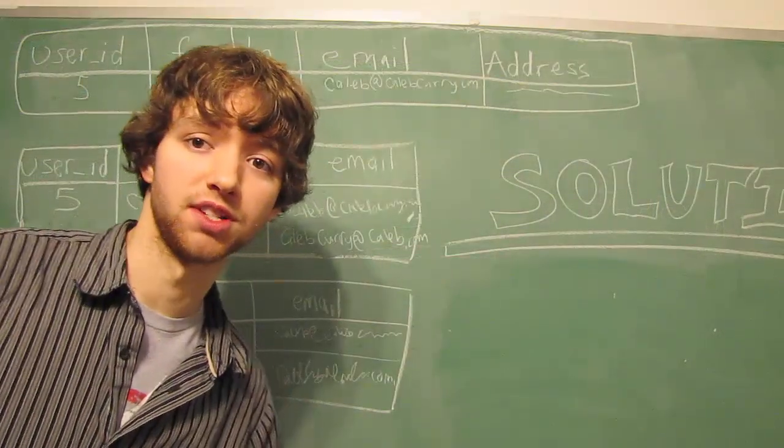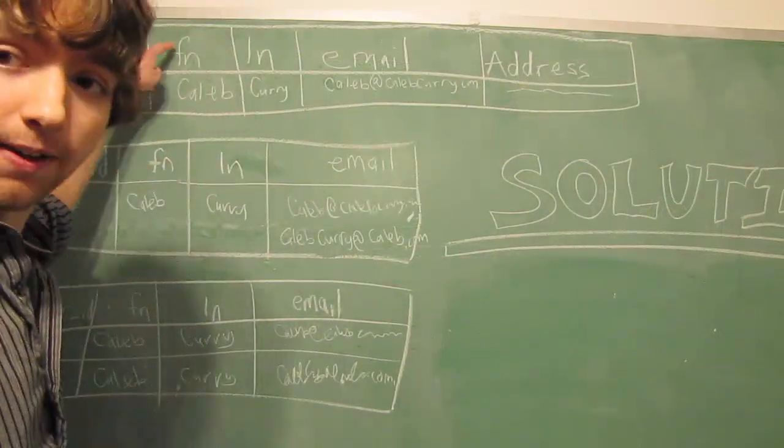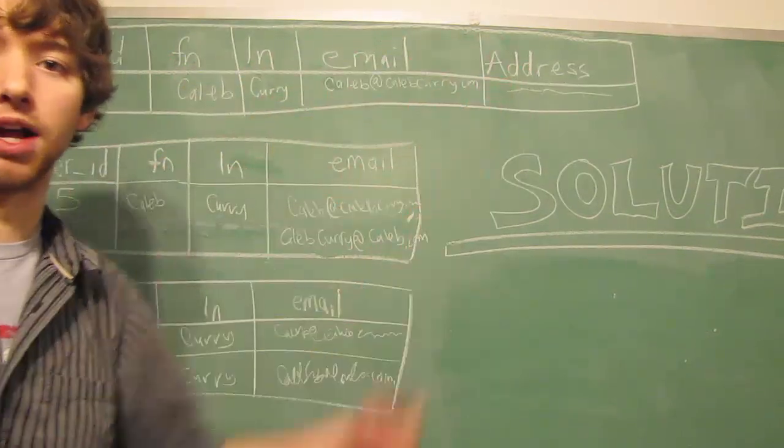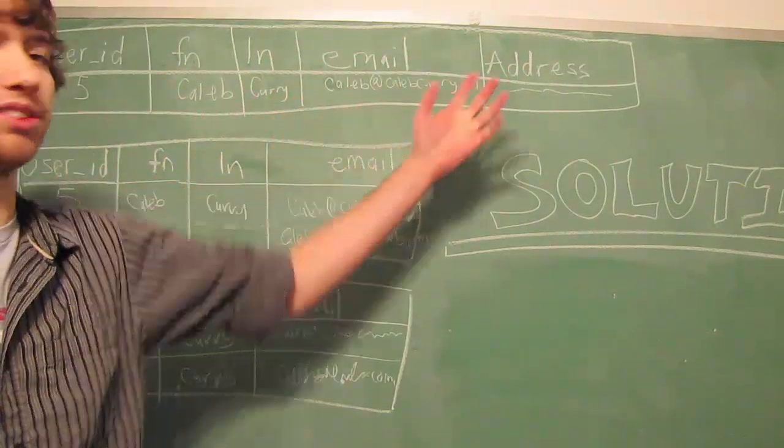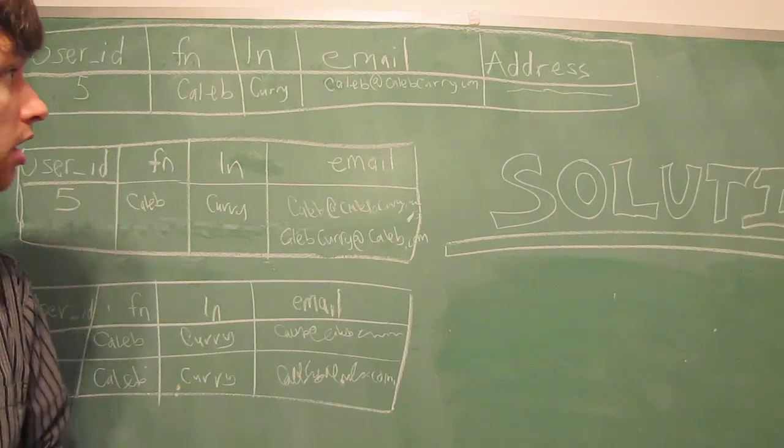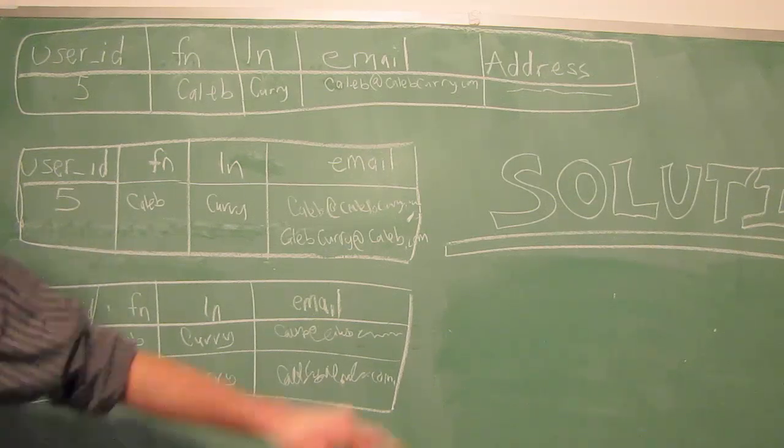If we take a look at this first example, we have a user ID, first name, last name, email, and address. I have some values in here, but those aren't really important in this example. The main thing you need to pay attention to is the address,